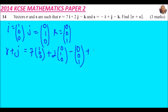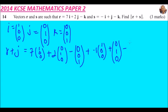Then vector s is added. For s: we have -1 times i, which is (1, 0, 0), then plus j which is (0, 1, 0) with no scalar multiple, and then minus k which is (0, 0, 1).